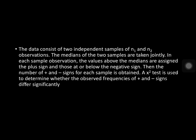The data consists of two independent samples with N1 and N2 observations. The medians of the two samples are taken jointly. In each sample observation, values above the median are assigned the plus sign and those at or below it are assigned the negative sign. Then the number of plus and minus signs for each sample is obtained. A chi-square test is used to determine whether the frequencies of the plus and minus signs differ significantly.